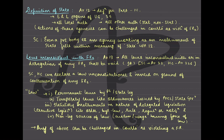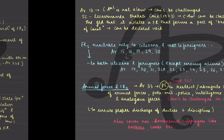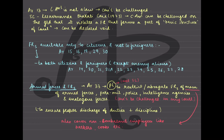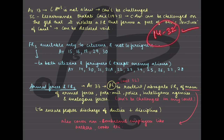Article 13 is about laws which are inconsistent with fundamental rights — we have done that in detail, so you will have to read the meaning of laws there. Moving on, since articles 14 to 32 are the fundamental rights and we'll deal with them separately, next is Article 33, which talks about armed forces and fundamental rights.